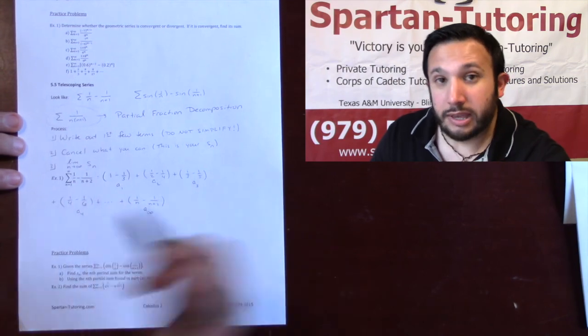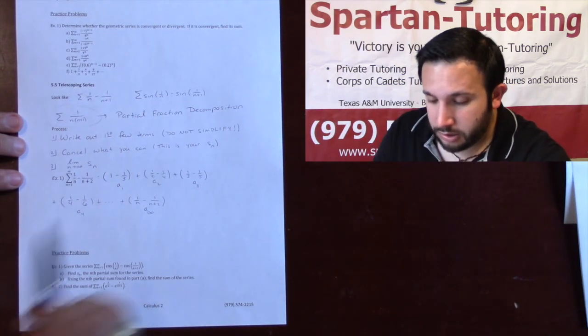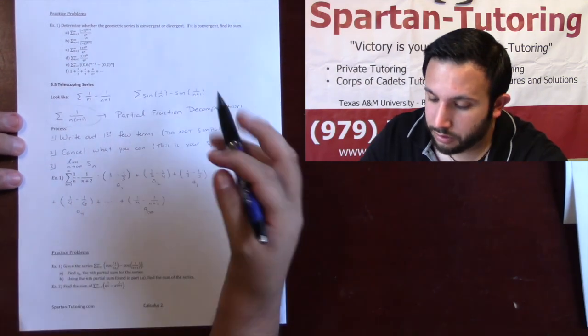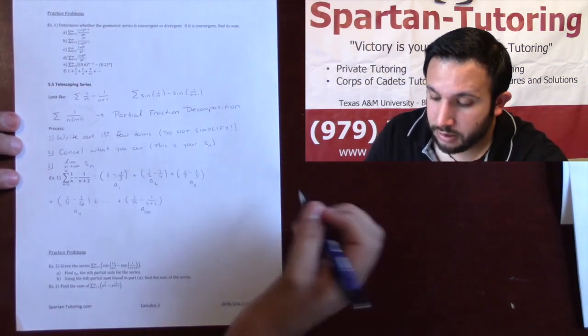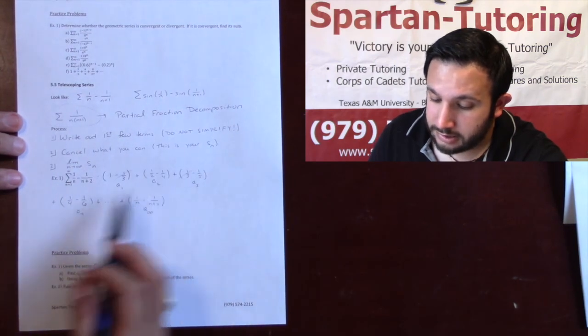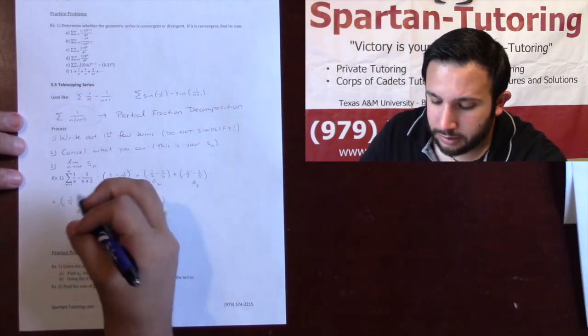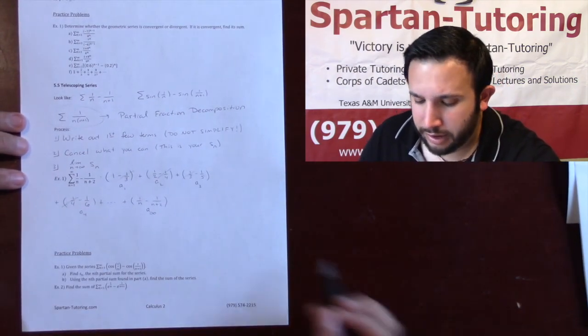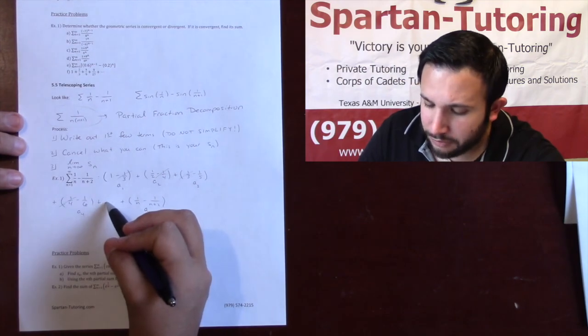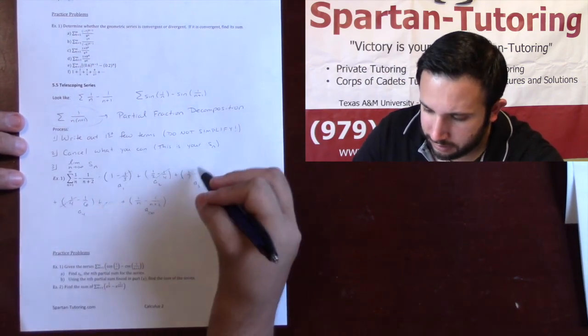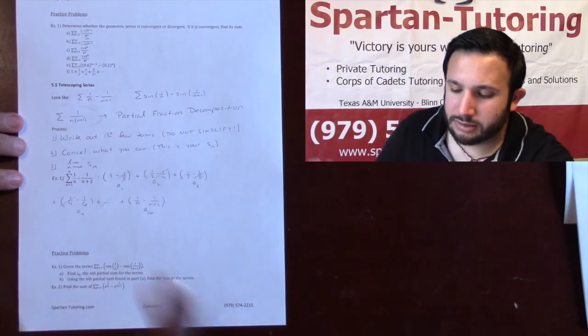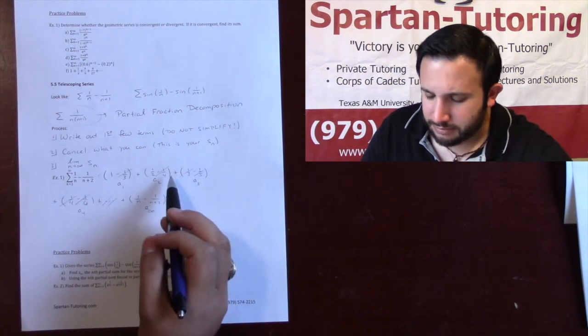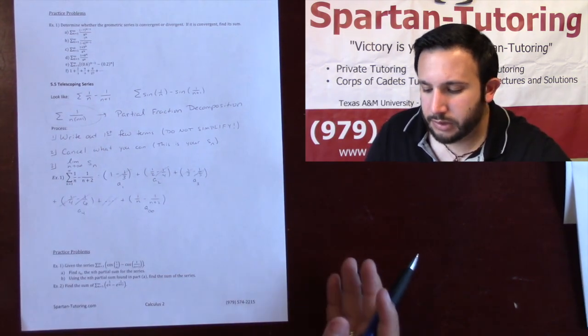The next thing I want to do is cancel what I can. So let's see what I can cancel. Well check this. I've got a positive 1/3 and a negative 1/3. So that'll cancel. What else? I've got a positive 1/4 right here and a negative 1/4. That'll cancel. Had I gone on to a_5, I'd have had a positive 1/5 right here and a negative 1/5. That would have canceled. Had I gone on to a_6, I would have had a positive 1/6, negative 1/6. And I recognize now that basically everything in the middle is going to cancel.